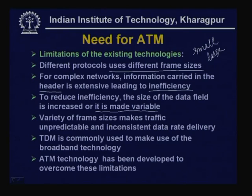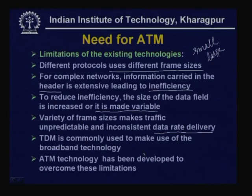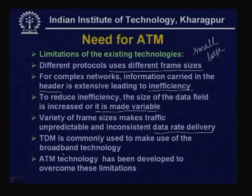Variety of frame sizes makes traffic unpredictable and results in inconsistent data rate delivery. When frame sizes differ, it makes data traffic unpredictable — when a frame will arrive, how long it will take, what the delay will be — all become unpredictable. Time division multiplexing is commonly used to exploit broadband technology. ATM has been developed to overcome these limitations.